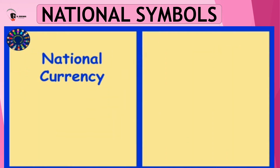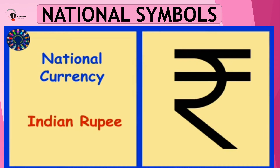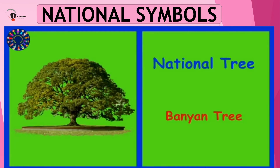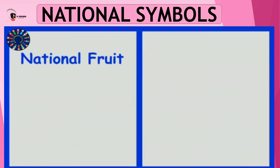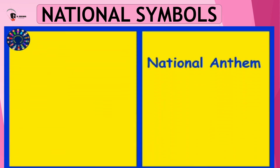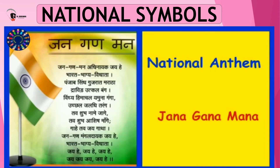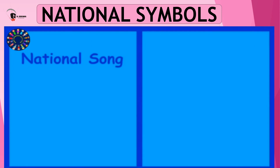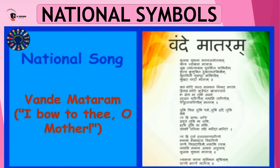What is our national currency? Our national currency is the Indian Rupee. Which is our national tree? Our national tree is the Banyan tree. Which is our national fruit? Our national fruit is the Mango. What is our national anthem? Our national anthem is Jana Gana Mana. Which is our national song? Our national song is Vande Mataram.